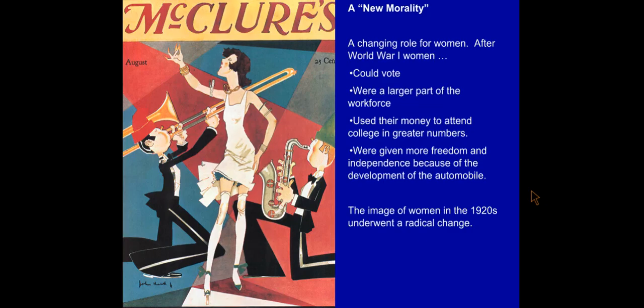First is with regards to gender roles in American society. The 1920s saw a new morality for women, and women's roles changed dramatically after World War I. They could vote as a result of the progressive era fight for women's suffrage — women were given nationwide the right to vote with a constitutional amendment. They were also a larger part of the American workforce, used their earnings to attend college, and gained more independence because of the development of the automobile. All of these things dramatically changed the role that women played in American society and how many women viewed themselves as participants in American democracy.